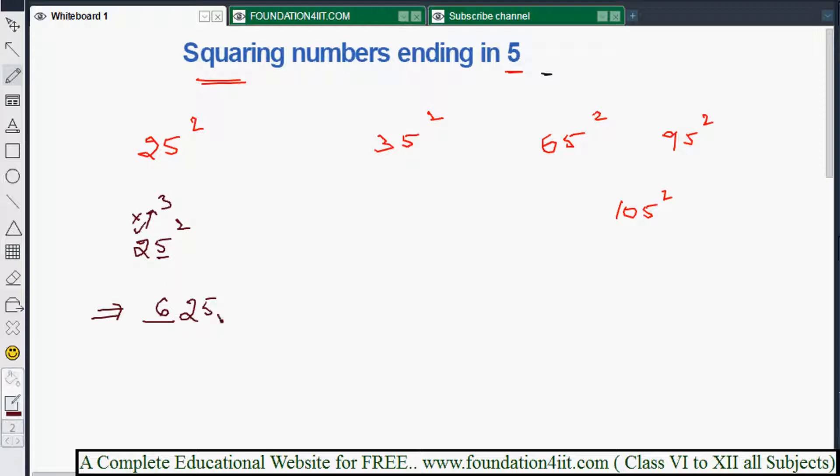Now check with one more, taking 35 square. So first number is 3 except 5, so 3 into next of the 3 number is 4. So 3 times 4 is 12. Keep 12 and 5 square is 25. Just attach, so 1225 is 35 square.